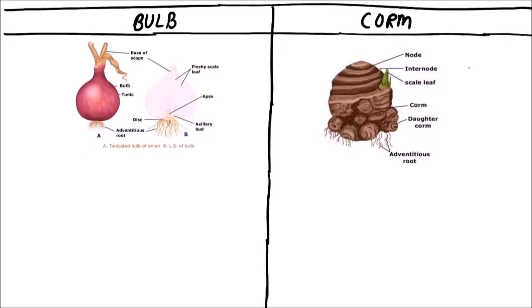Welcome to Studio Biology. In this video we are going to discuss the differences between a bulb and a corm. Both are underground modifications of a stem.